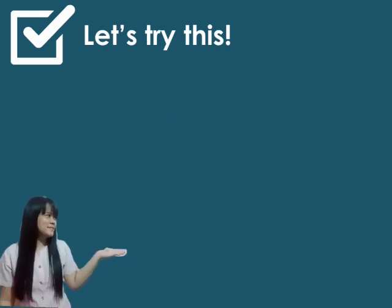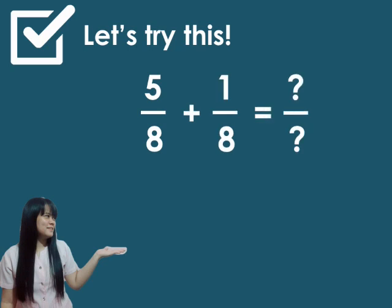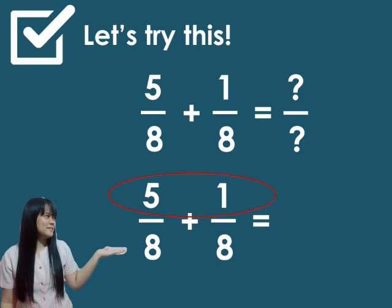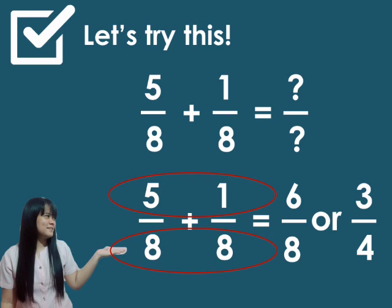Another. 5 over 8 plus 1 over 8 is equal to? Okay. Let us have the numerator, which is 5 plus 1, and the denominator, which is 8. So, the answer will be 6 over 8, or we can simplify as 3 over 4.